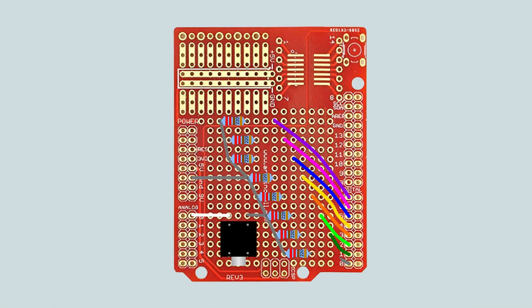It looks like the values max out between 350 and 400. So for my digital output, I'm going to break that 400 into eight sections of 50 and use an LED for each. Using green, yellow, and red LEDs, I can create a sort of visual volume meter. I'll use eight of the digital I/O pins to control the LEDs — one pin for each.